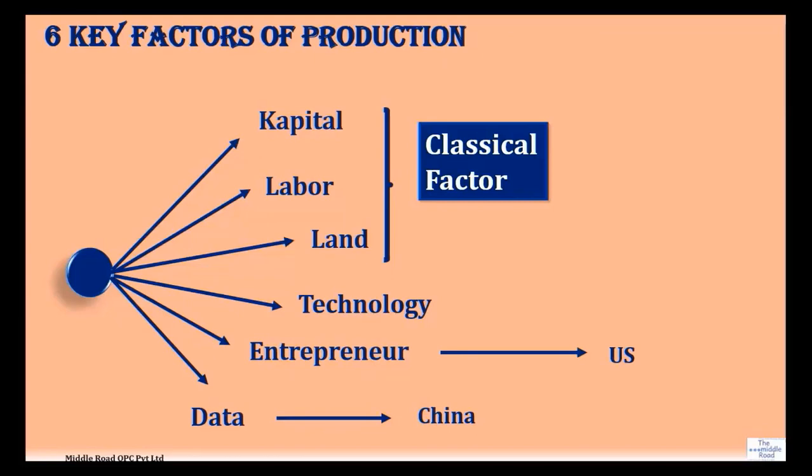We look at six factors of production: capital, labor, and land. These are the classical factors.